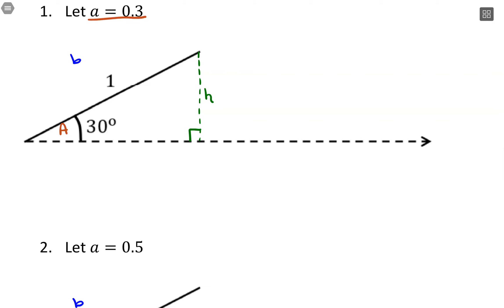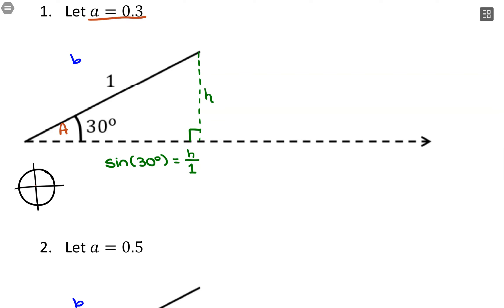I'm going to find the height h of the triangle. If this is a right triangle, I can use SOH-CAH-TOA. I have the opposite side from 30 degrees and the hypotenuse, so: sine of 30° = h/1. From the unit circle, sine of 30° is 1/2, so 1/2 = h/1, which means h = 0.5.